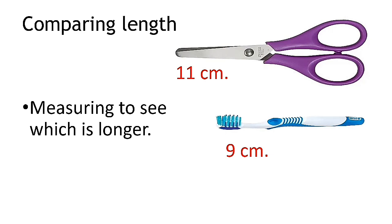As you can see here, we have scissors and a toothbrush. We are going to compare the length between these two things. The scissors is 11 centimeters and the toothbrush is 9 centimeters. So which one is longer? Yes, of course the scissors, at 11 centimeters.